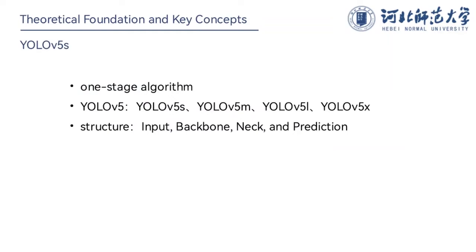Object detection algorithms based on deep learning can be roughly divided into two-stage algorithms and one-stage algorithms. We choose the one-stage object detector YOLO to solve the problem. As the technology advances, there are many versions of the YOLO model. In 2020, Joker released YOLO-V5, which has four network models named YOLO-V5S, YOLO-V5M, YOLO-V5L, and YOLO-V5X.